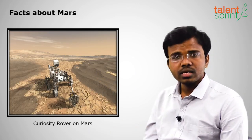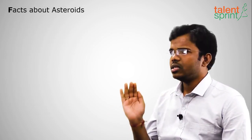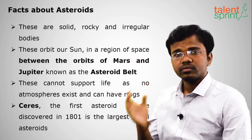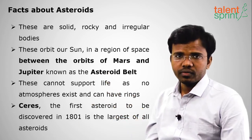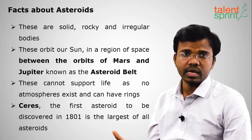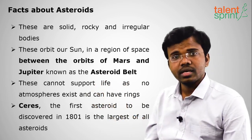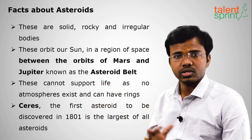After Mars comes the asteroid belt, located between Mars and Jupiter. Asteroids are rocky debris that also revolve around the sun, like other planets. They cannot support life — the only planet supporting life is Earth. The largest asteroid is Ceres, discovered in 1801, located in the asteroid belt between Mars and Jupiter.